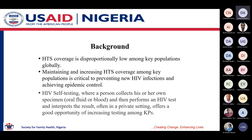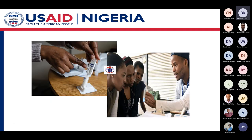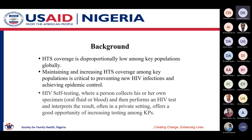We know that for us to achieve epidemic control, new infection rates should be lower than HIV-related deaths, and we cannot achieve this without focusing on increasing testing services for key populations. HIV self-testing offers a good opportunity for increasing testing among key populations. What happens in HIV self-testing is that a person collects their own specimen — which could be oral fluid or blood — and performs an HIV test and interprets the results, often in a private setting.